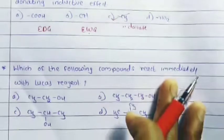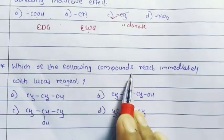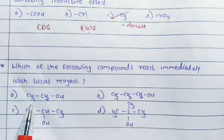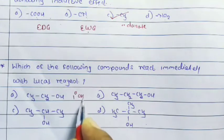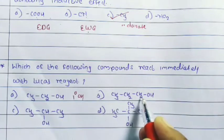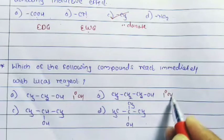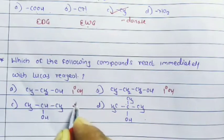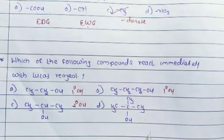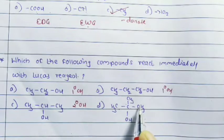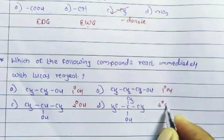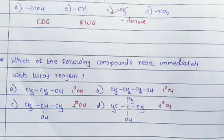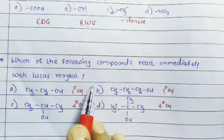Next question: which of the following compounds reacts immediately with Lucas reagent? The options are CH3CH2OH (primary alcohol), CH3CH2CH2OH (primary alcohol), CH3CHOHCH3 (secondary alcohol), and (CH3)3COH (tertiary alcohol). Which of these immediately reacts with Lucas reagent?